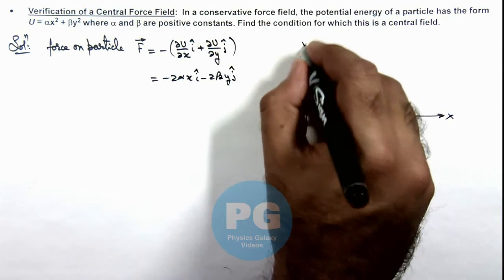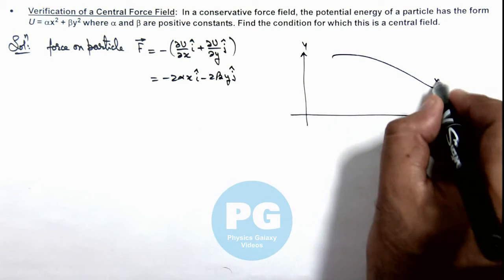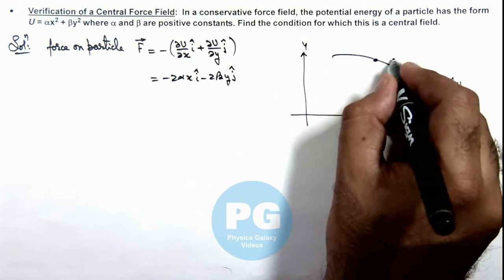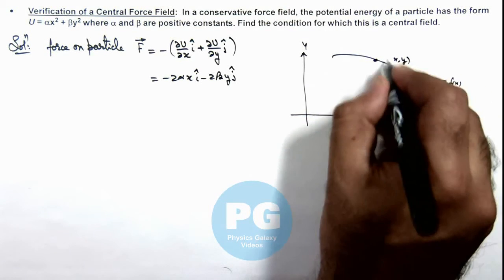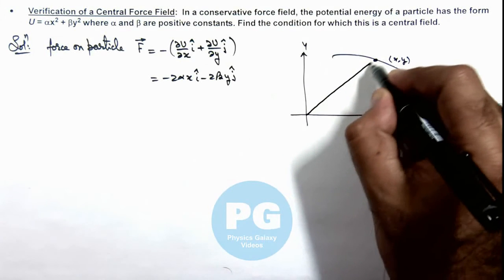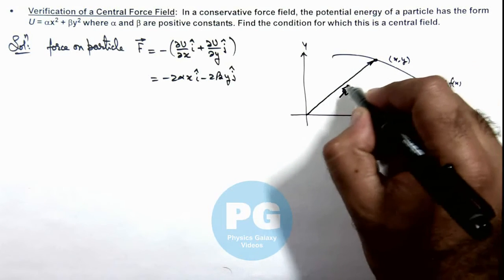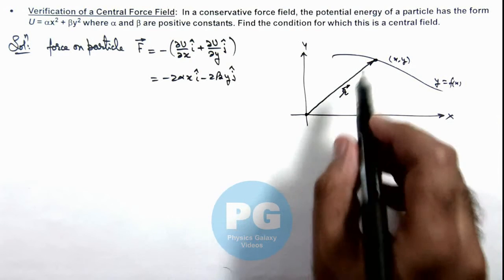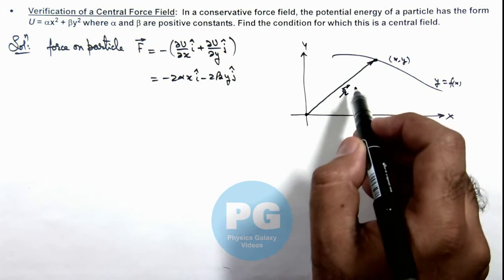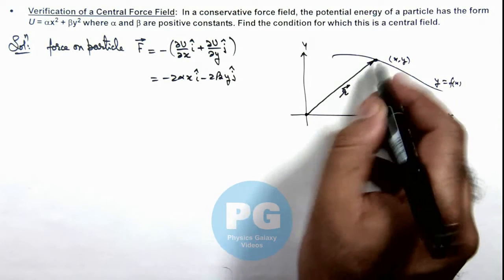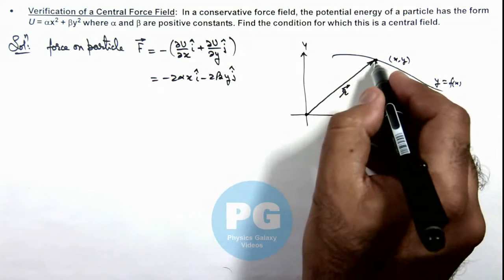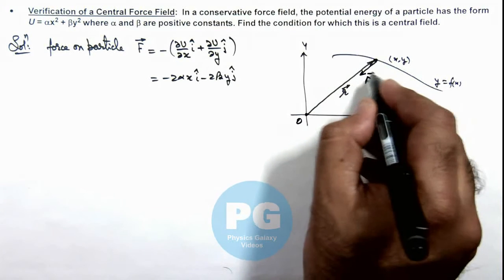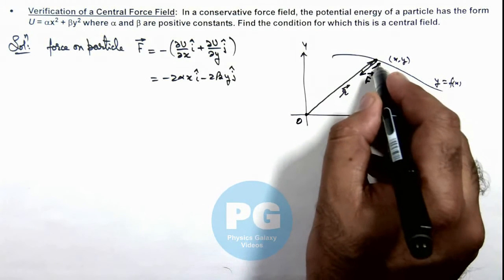Consider a coordinate system in which a particle is moving in a trajectory y = f(x). At any general position (x, y), if the position vector of the particle is r, then the force can be taken as a central force if the force vector is acting along the position vector, either toward point O or away from point O.